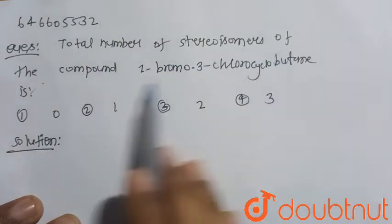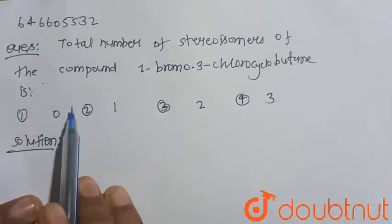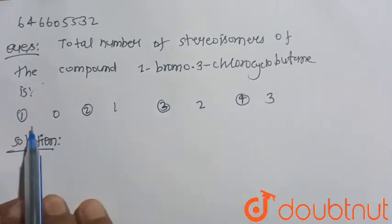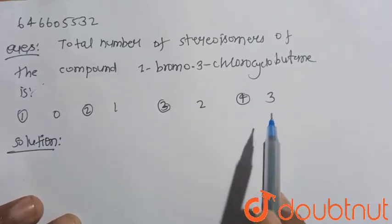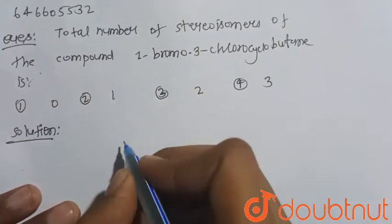Total number of stereoisomers of the compound 1-bromo-3-chlorocyclobutane is - these four options are given: first one is zero, second is one, third is two, and fourth is three. So first we have to draw the structure of the stereoisomers.